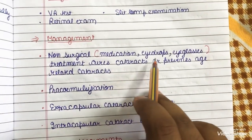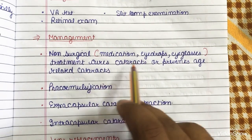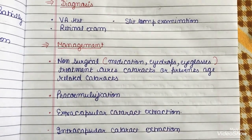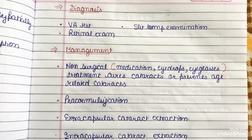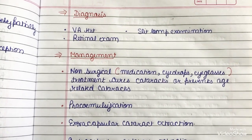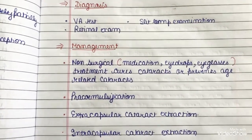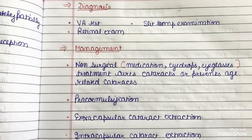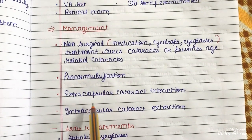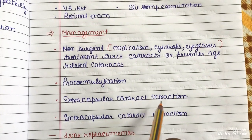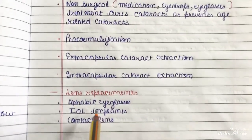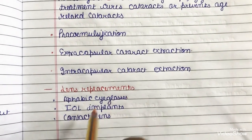In management, non-surgical options include medications, eye drops, and eyeglasses, though no medication fully cures or prevents age-related cataracts. Surgical methods include phacoemulsification, extracapsular cataract extraction, and intracapsular cataract extraction. Lens replacement options include IOL implants, contact lenses, and effective eyeglasses.